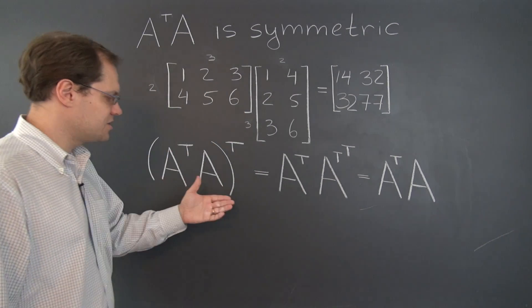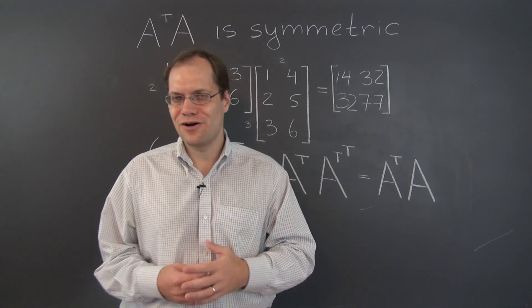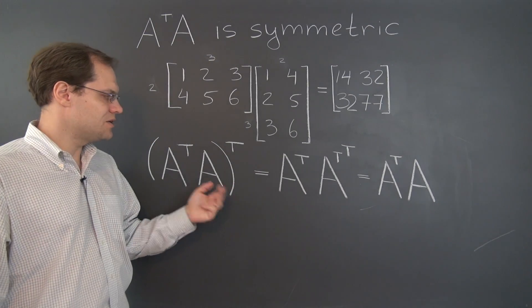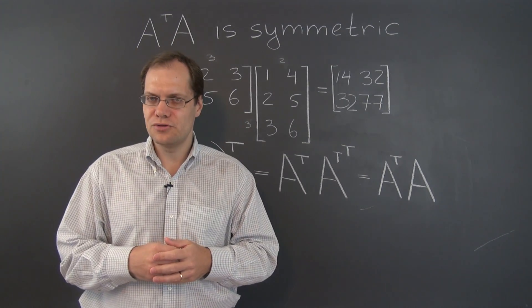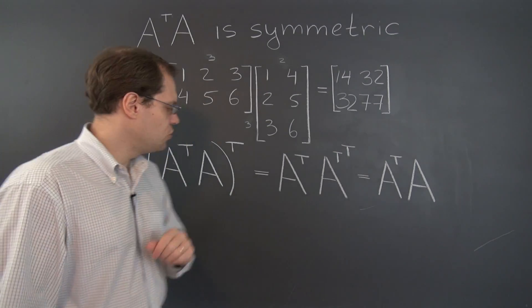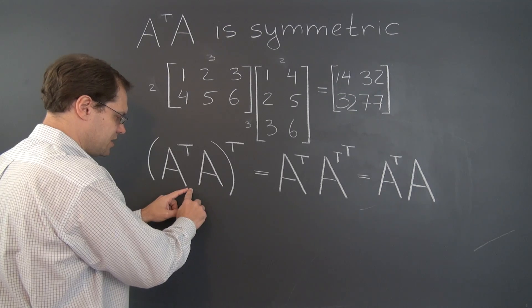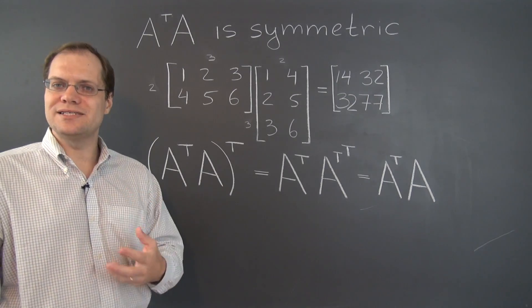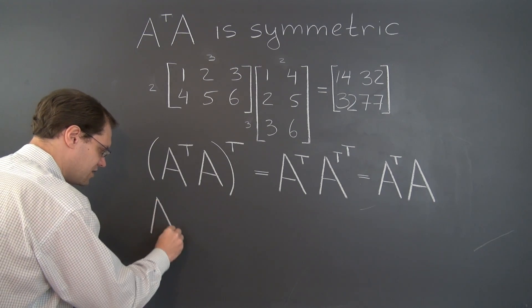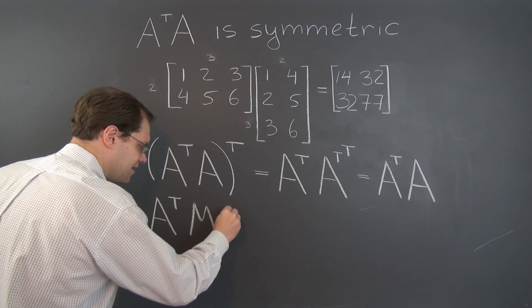Here's an example of another statement that you can prove much more easily with this bird's eye view approach than you would if you were to argue it entry by entry. You can prove that if you were to stick a symmetric matrix between these two matrices, the result is once again a symmetric matrix. It's a generalization of this result.